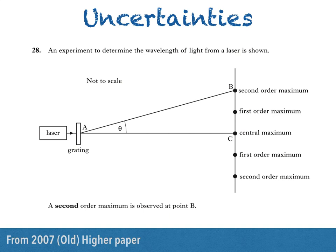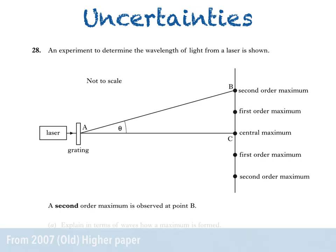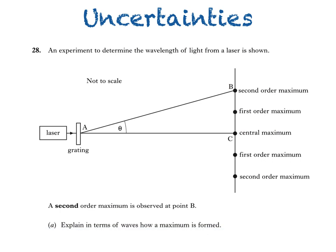An experiment to determine the wavelength of light from a laser is shown. A second order maximum is observed at point B. Part A then asks us to explain in terms of wavelengths how a maximum is formed.